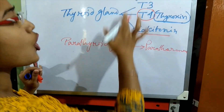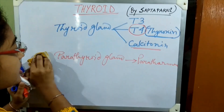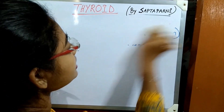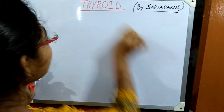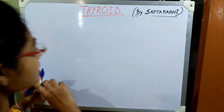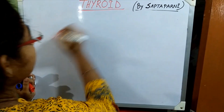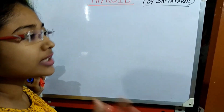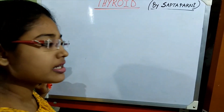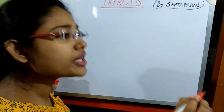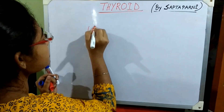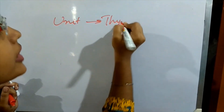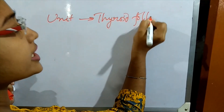Before discussing T3 and T4 functions, we need to know the histology of the thyroid gland. Like all other glands, our thyroid gland has a capsule. The functional unit of our thyroid gland is known as thyroid follicles.